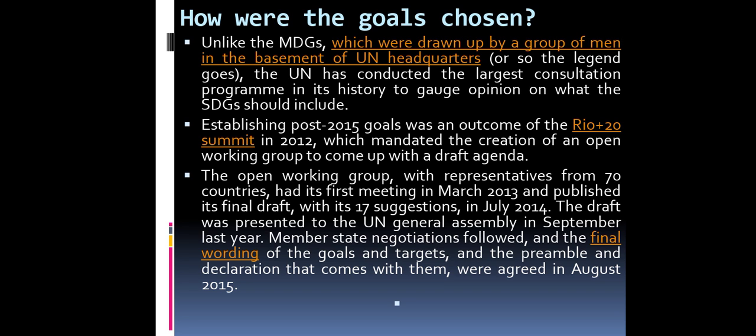How were the goals chosen? Unlike the MDGs, which were drawn up by a group of men in the basement of UN headquarters, the UN conducted the largest consultation program in its history to get opinion on what the SDGs should include. Establishing post-2015 goals was an outcome of the Rio+20 summit in 2012, which mandated the creation of an open working group. The open working group, with representatives from 70 countries, had its first meeting in March 2013.